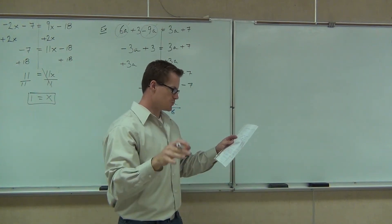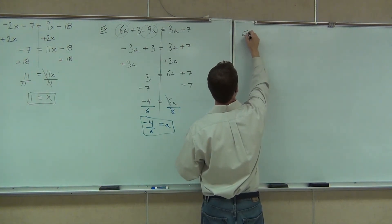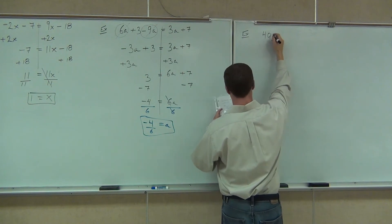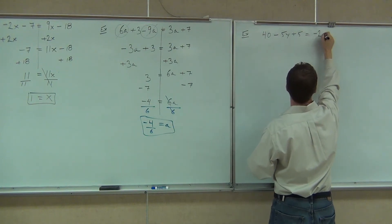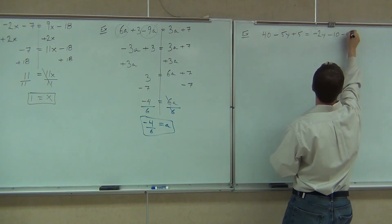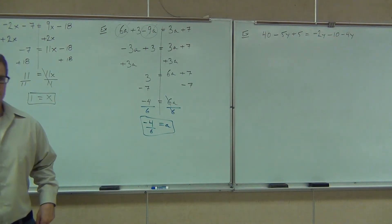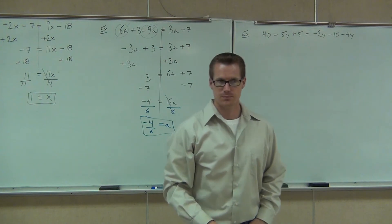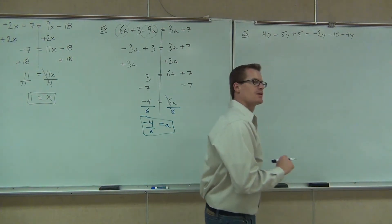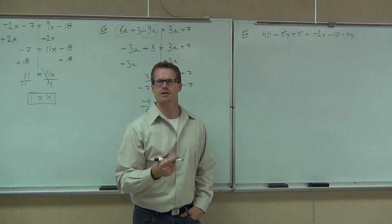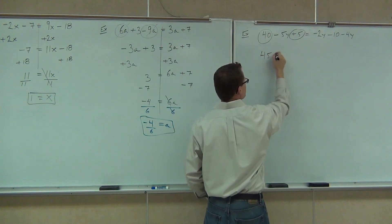We'll do one more together. We'll do a couple more together. I'll give you two more to do on your own, and then we'll start moving on. All right, let's go for it. First thing we've got to do is look for any like terms that we have to combine. So if there's no distribution, we're looking for like terms. Do we have any like terms on the left-hand side? Yes. What are they? 40 and 5. So if we combine 40 and 5, how much do we get? 45.